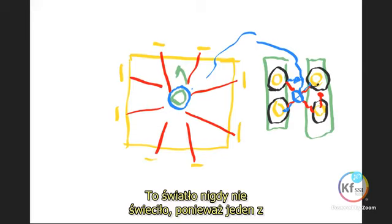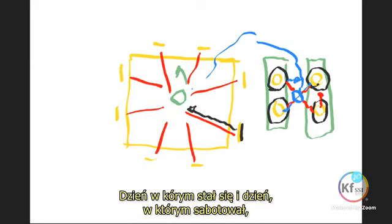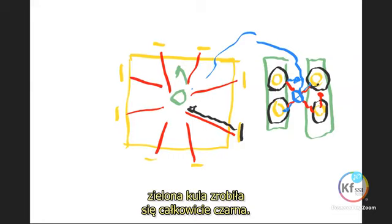This light never lit. Because one of the players, a Belgian, was a murderer. He came. And the day he tampered with it, a green ball went totally black.